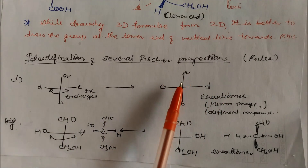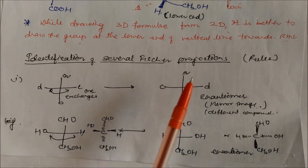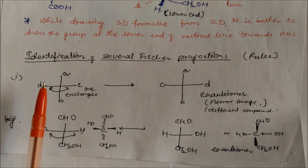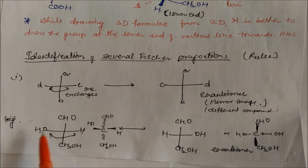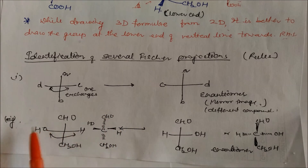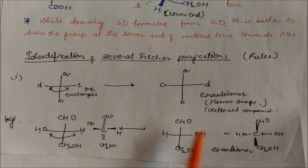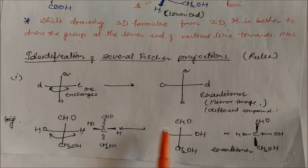Enantiomer means a mirror image. For example with CHO, CH2OH, hydrogen, and OH: if you exchange these groups in the wedge-dash representation, you get H, OH, and CH2OH rearranged — this is again an enantiomer. So in one exchange, you always get the enantiomer of the compound. These are different compounds but isomers with different optical rotations.